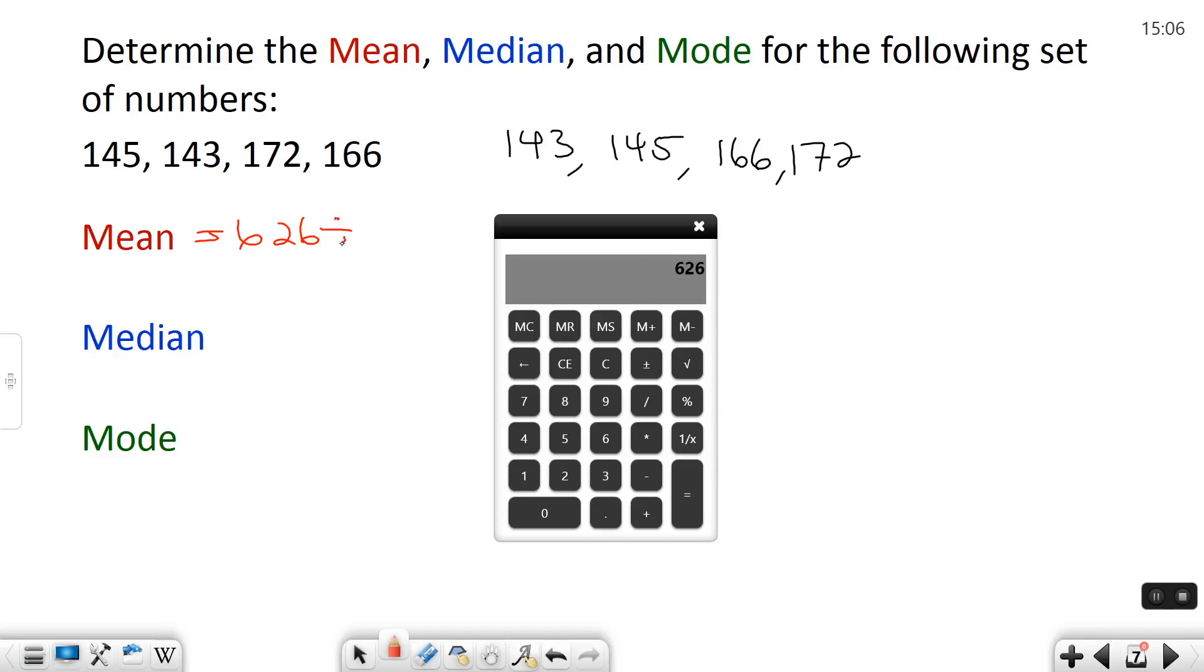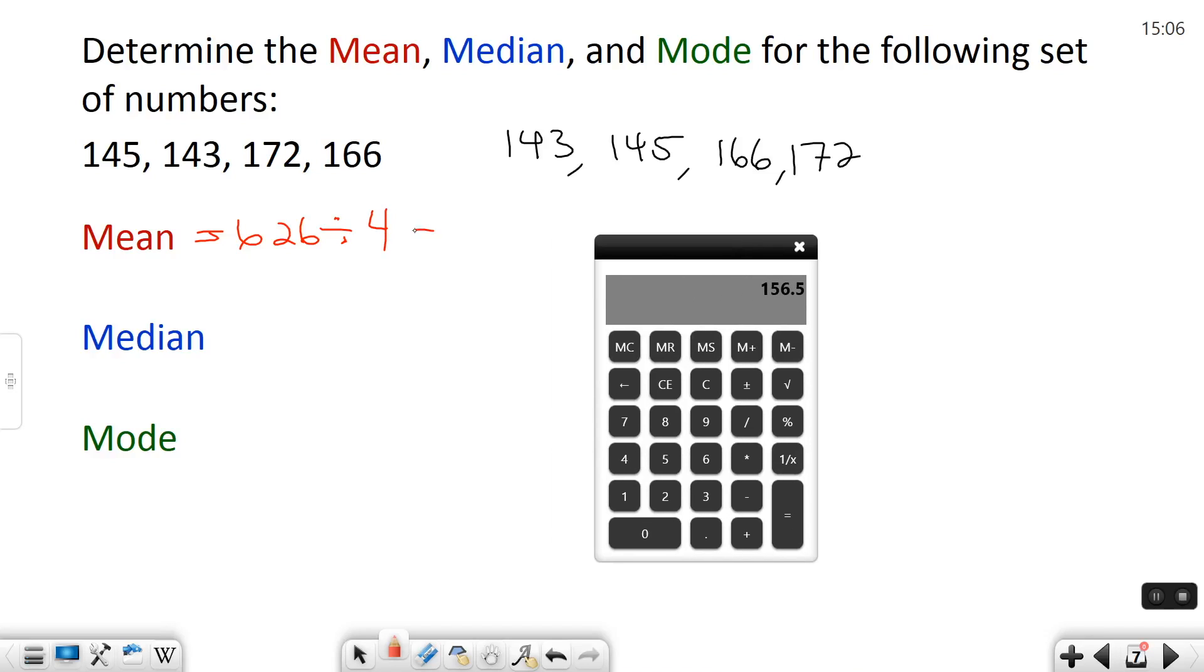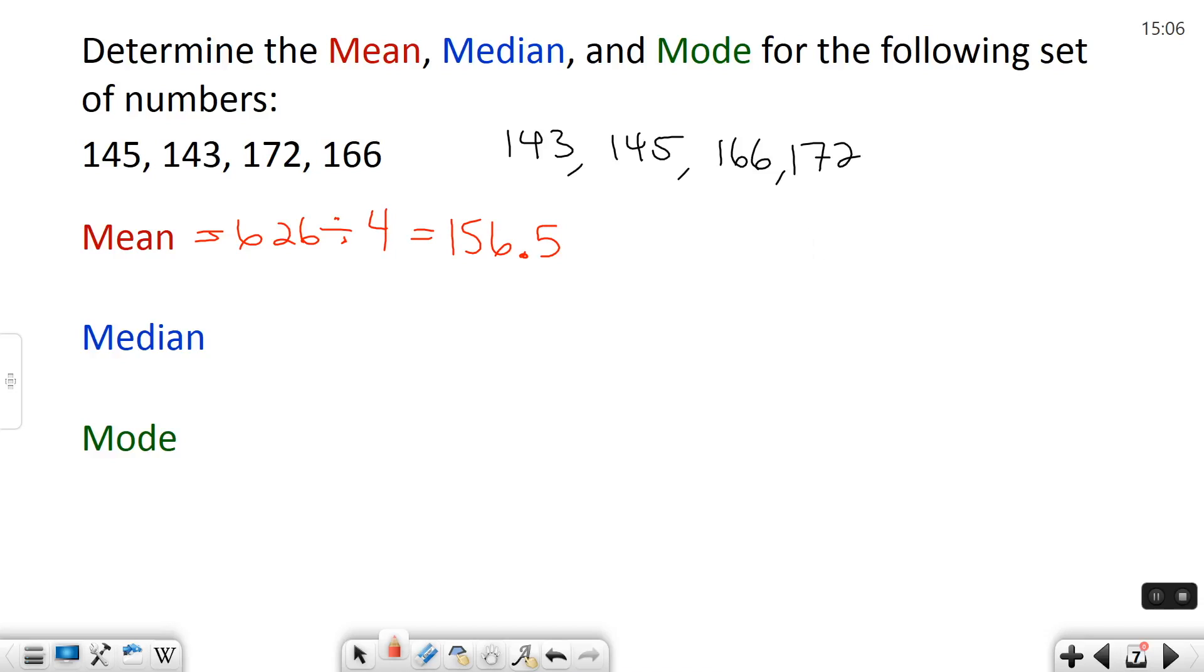And I want to divide that by four because there's four numbers in my data set. Divide by four, I get 156.5. So something to note here is we have a decimal as our average. That's perfectly fine. Even if all of your numbers are whole numbers, the average can be a decimal. It's not always going to work out where the sum of your numbers is going to be evenly divisible by however many there are. So don't freak out. Usually if this happens, they'll tell you round to the nearest tenth, round to the nearest hundredth, and you can go on from there.